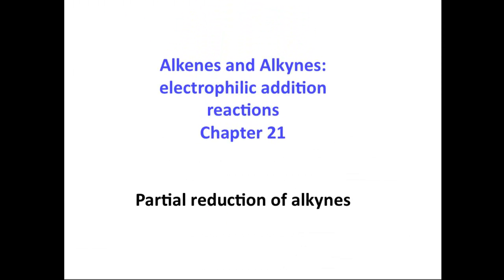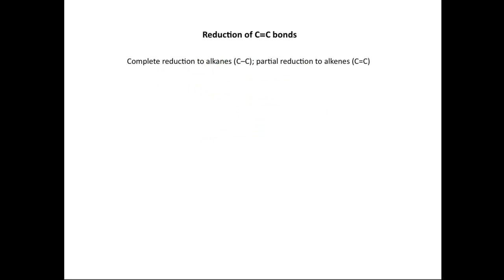So we're going to discuss partial reduction of alkynes, which is discussed in the Alkenes and Alkynes Electrophilic Addition Reactions chapter. The complete reduction of a C-C triple bond forms an alkane, whereas partial reduction of a C-C triple bond forms an alkene. So let's look at an example of these types of reductions.